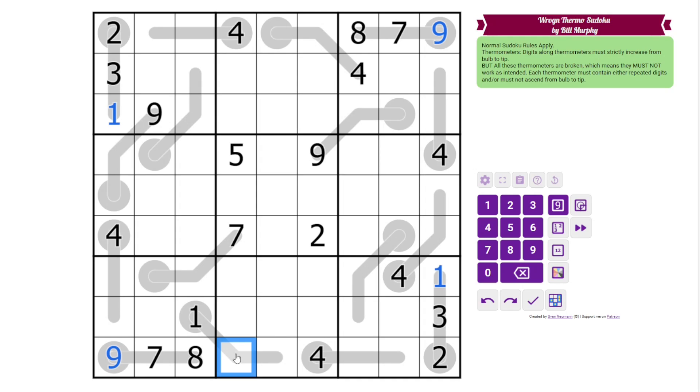We either need to repeat 1, so if we put a 1 there, this is broken. Or this needs to be smaller than this. There are a lot of possibilities for that right now. Actually, where does 1 go in this box? It has to go on this thermo, so this will be broken because there's a 1 here somewhere. These digits can't be 3, so this is actually 1, 3 in some order. And this is broken either way those go.